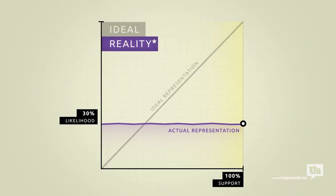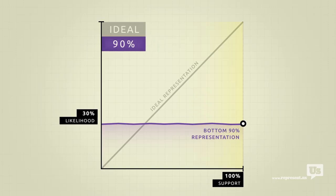But there's a catch. This flat line only accounts for the bottom 90% of income earners in America. Economic elites, business interests, people who can afford lobbyists, they get their own line.